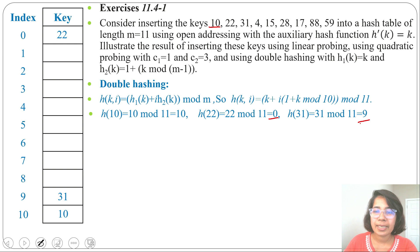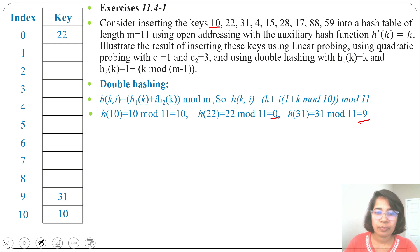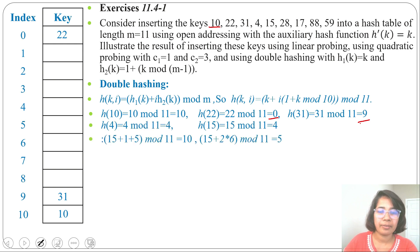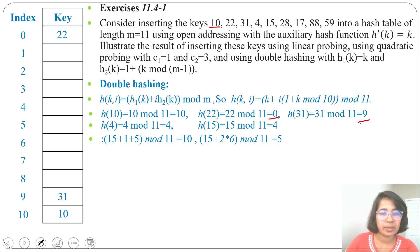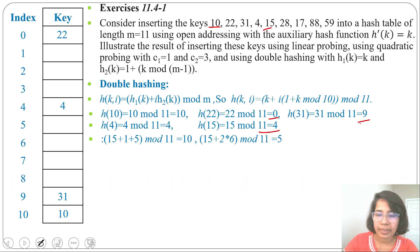These are the same as linear and quadratic probing — the only difference will be when a collision arises. Next key is 4: 4 mod 11 = 4, insert 4 at index 4. Next key is 15: 15 mod 11 = 4, but slot 4 is already filled.